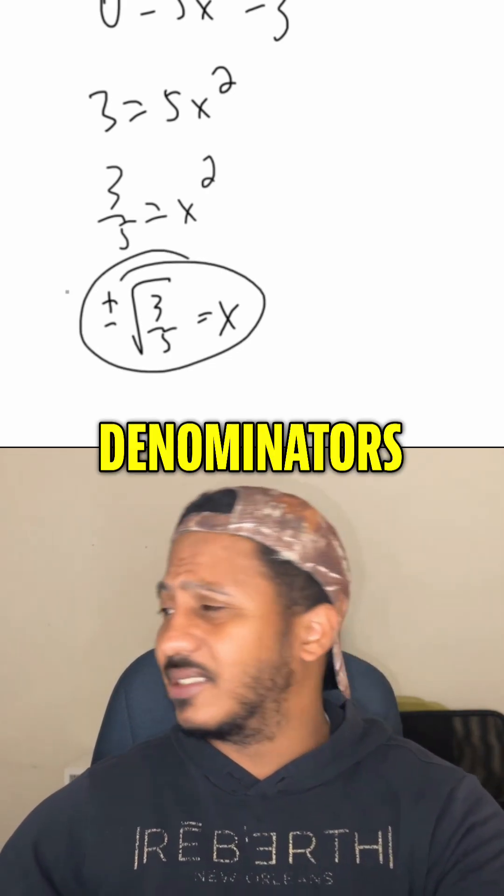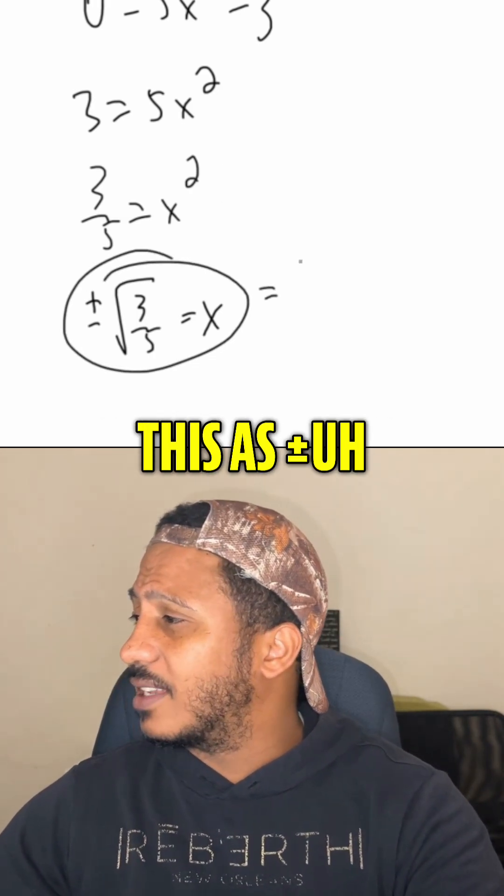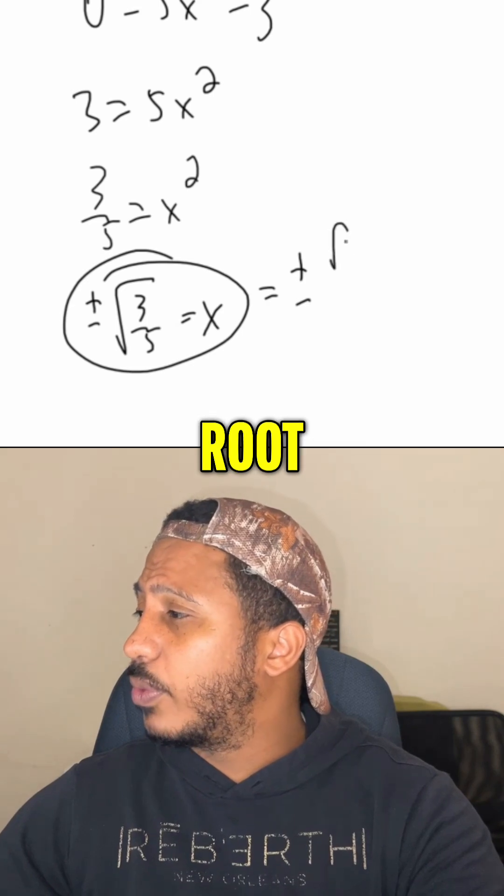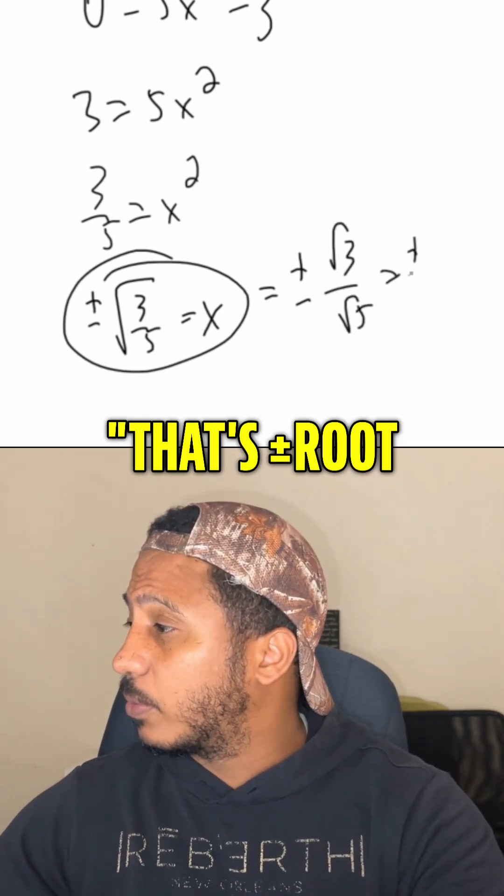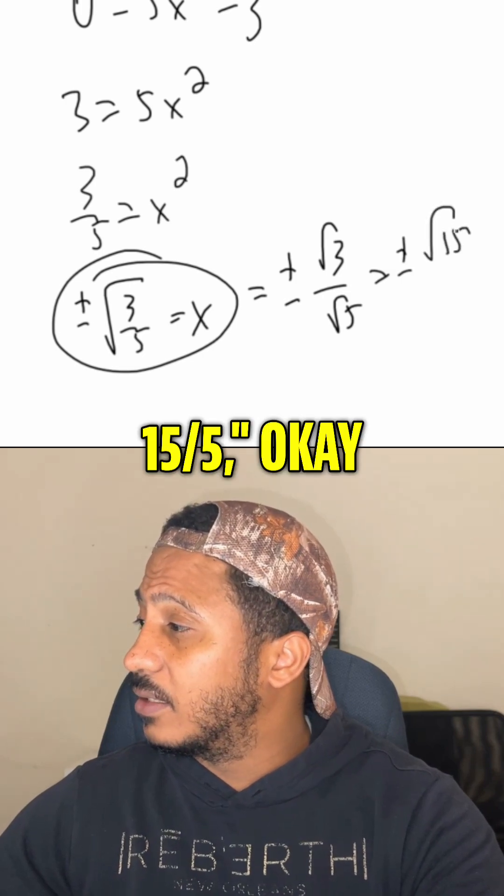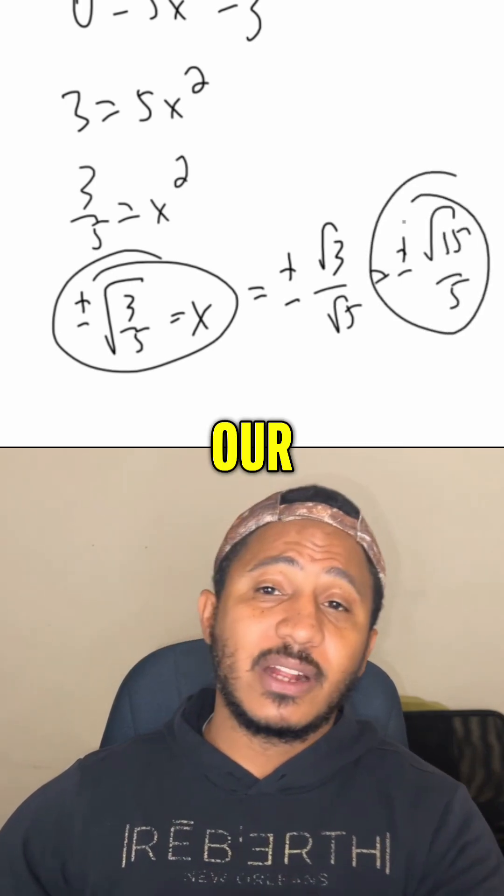Now, a lot of times we want to rationalize these denominators. So we could write this as plus or minus root 3 over root 5. By multiplying both top and bottom by root 5, we would say that's plus or minus root 15 over 5. But that would be our two solutions.